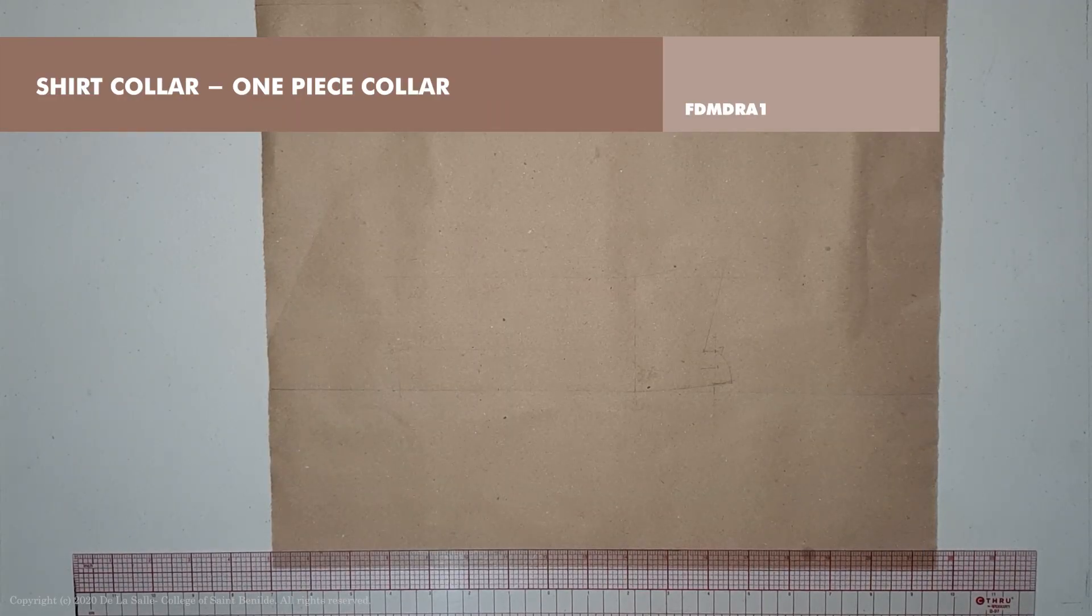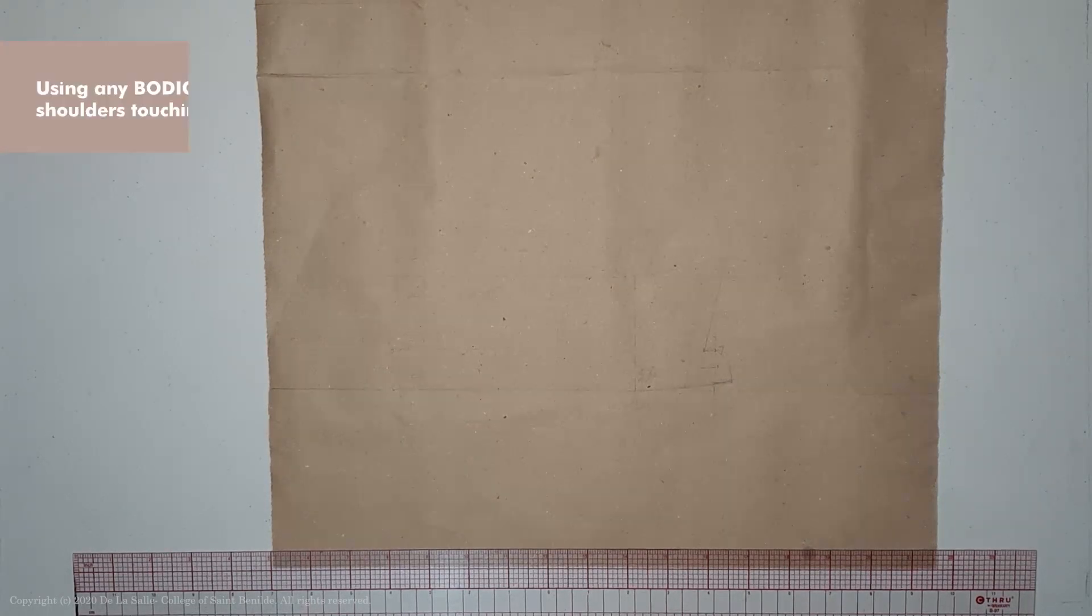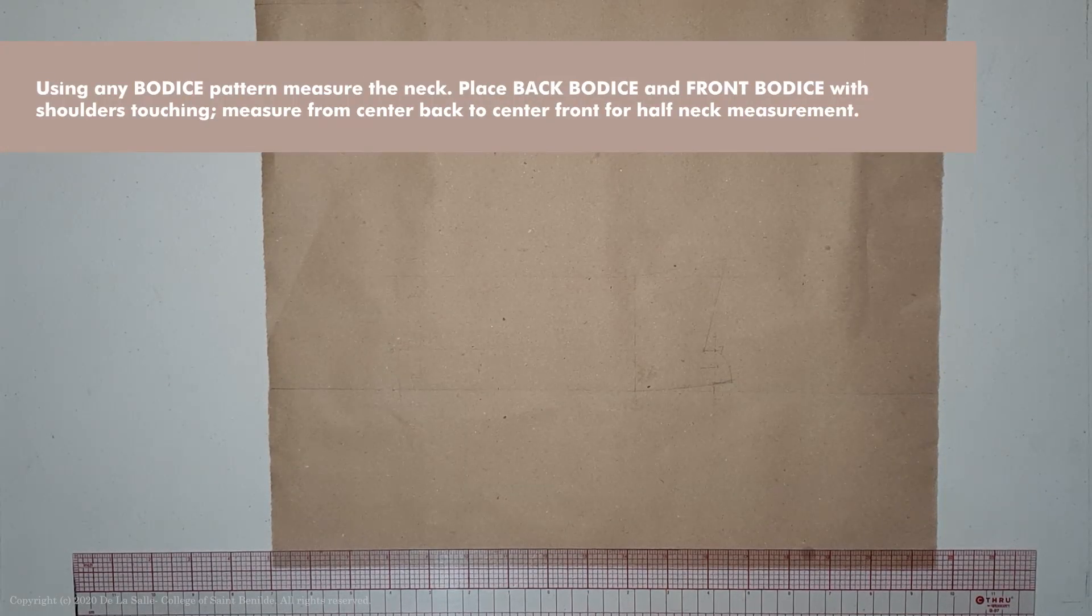Our next collar variation is a shirt collar. For the shirt collar, we're going to be using any bodice pattern and then measure the neckline, same process we did for how to measure the neckline of a pattern.